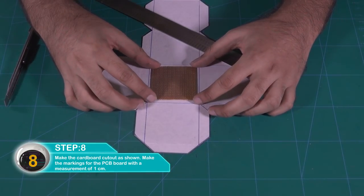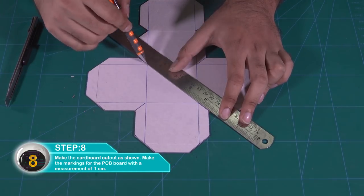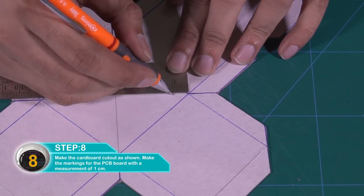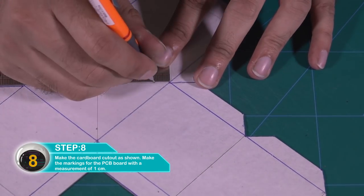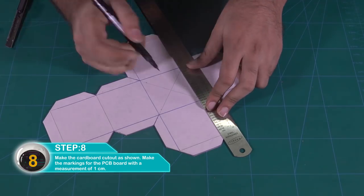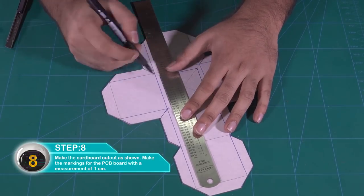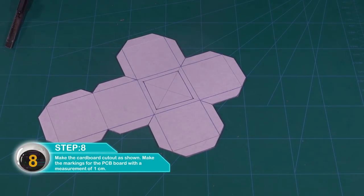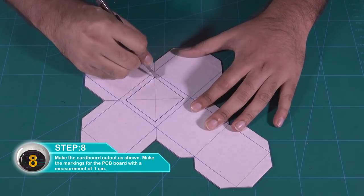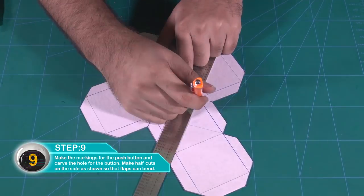Make the markings for the PCB board. Make the markings for the push button and carve the hole for the button.